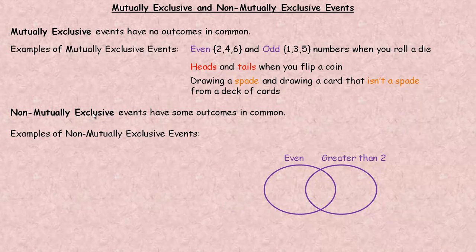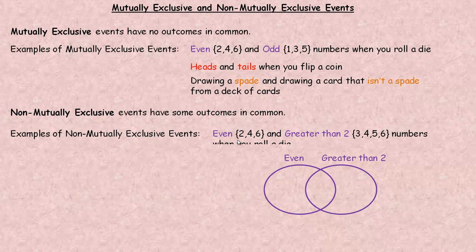Non-mutually exclusive events have some outcomes in common. For example, when rolling a normal six-sided die, the event of getting an even number — 2, 4, or 6 — and the event of getting a number greater than 2 — which is 3, 4, or 5 — have the 4 and 6 in common. So those would be two events that are non-mutually exclusive.